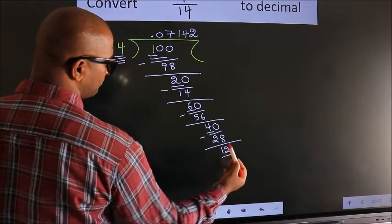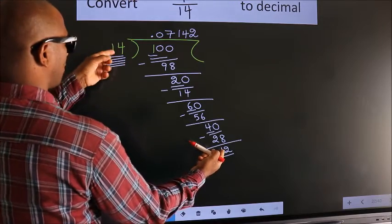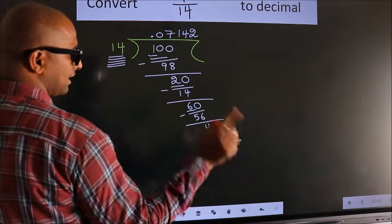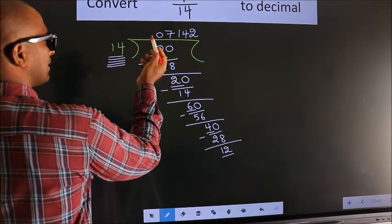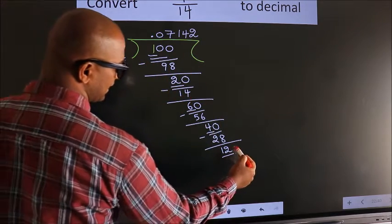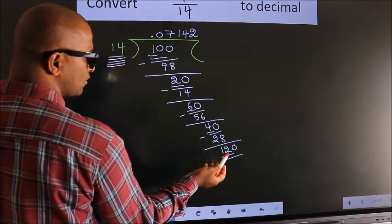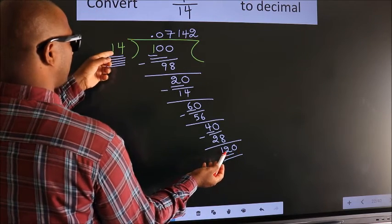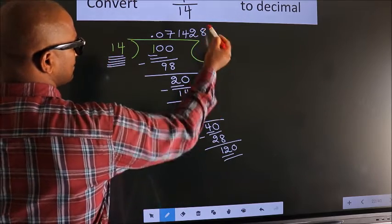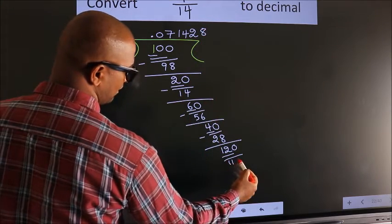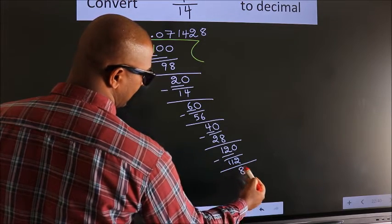Here we have 12, here 14. 12 is smaller than 14, and we already have the decimal, so we can directly take 0. So 120. A number close to 120 in the 14 table is 14 eights, 112. Now we subtract and we get 8.